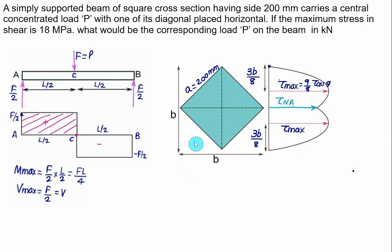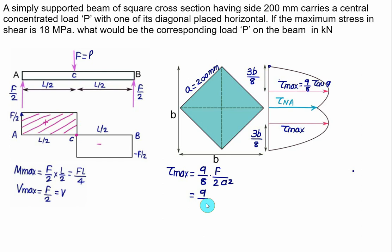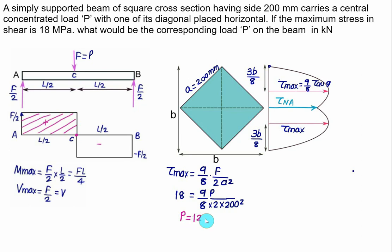The area equals A² = 200² mm². Substituting: τ_max = (9/8) × (P/2) / A² = 18 MPa. Solving: P = 18 × 2 × A² × (8/9) = 18 × 2 × 40000 × (8/9). This gives P = 1,280,000 N = 1280 kN.